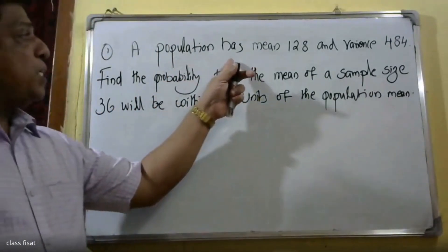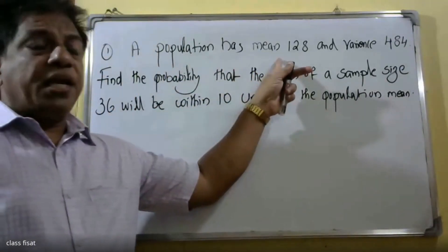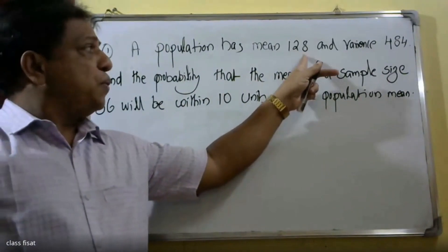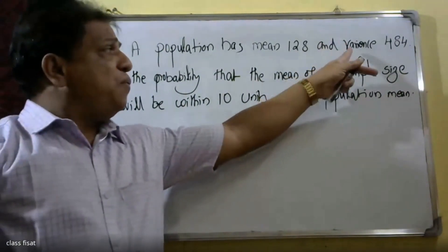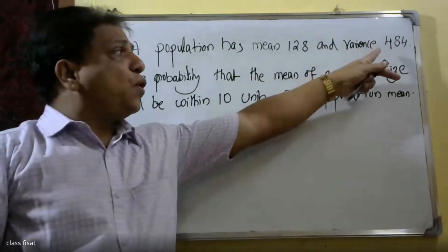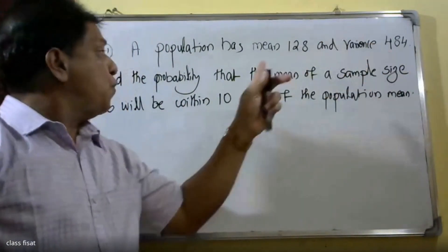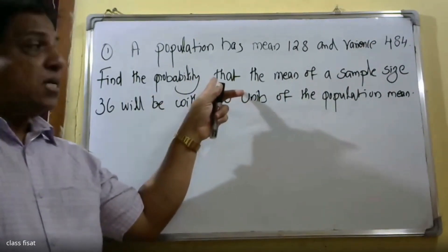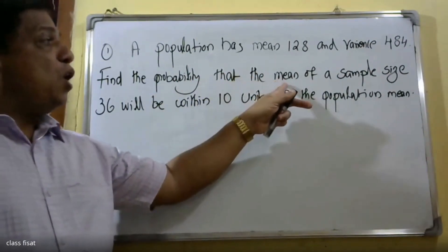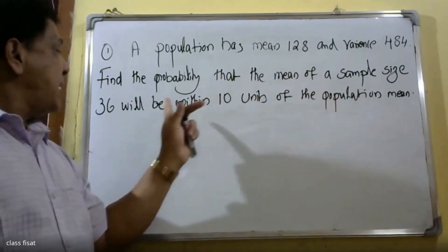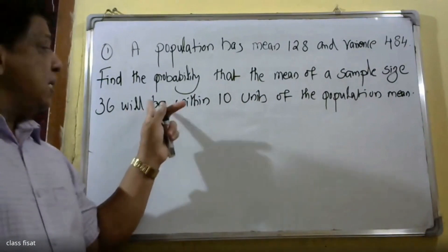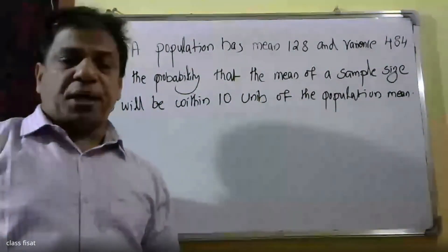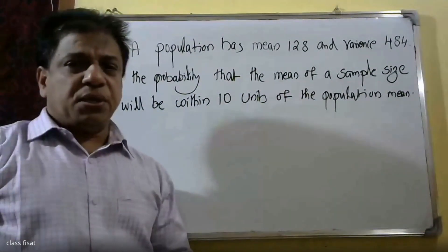A population has mean 128 and variance 484. Find the probability that the mean of the sample size 36 will be within 10 units of the population mean.